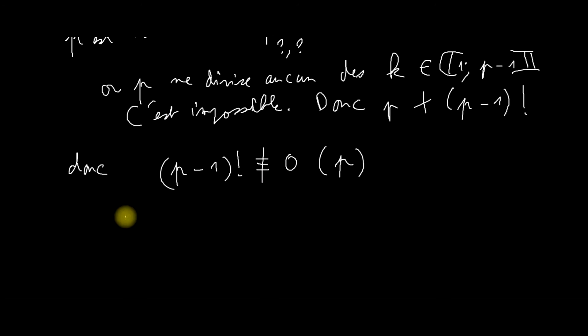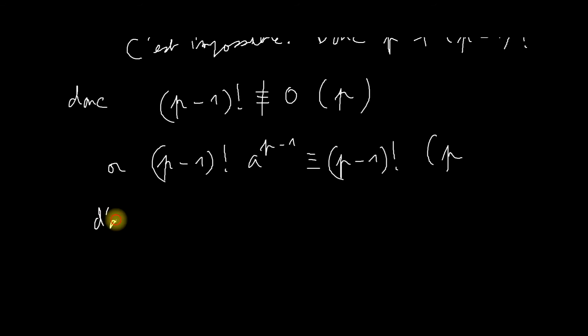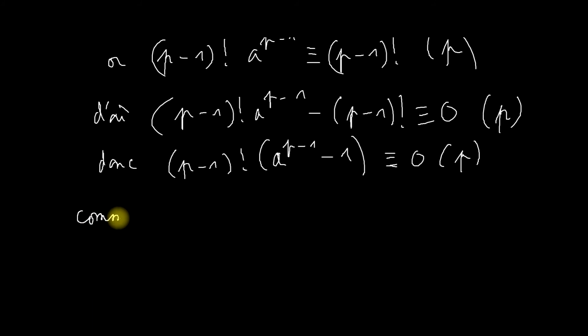P moins 1 factoriel n'est pas congru à 0 modulo P. Or, je sais, je l'ai démontré au petit C, que P moins 1 factoriel A puissance P moins 1 est congru à P moins 1 factoriel. D'où, P moins 1 factoriel fois A puissance P moins 1 moins P moins 1 factoriel est congru à 0 modulo P. Je factorise par P moins 1 factoriel. Comme je sais que P moins 1 factoriel n'est pas congru à 0, ce qui signifie que P ne divise pas P moins 1 factoriel, je peux dire que P divise A puissance P moins 1 moins 1.